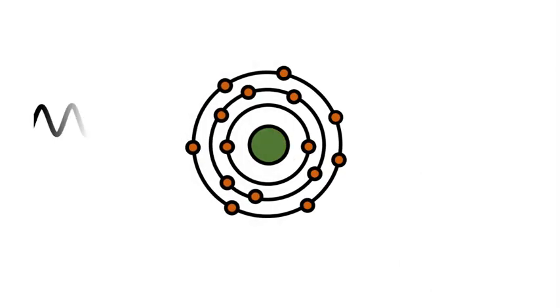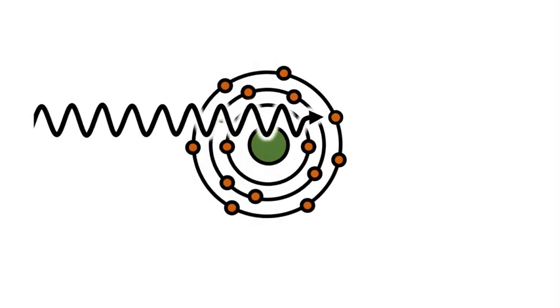So here's what happens. The x-ray photon enters an atom in the body and the x-ray photon energy is partially absorbed by a loosely bound outer shell electron. This results in the electron being knocked out of its orbit, which we call ionization.